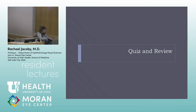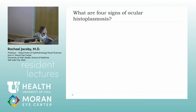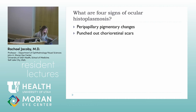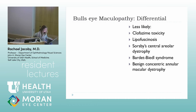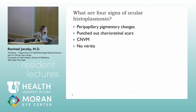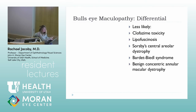Review question: the four signs of ocular histo are punched-out lesions, pigmentary changes, no vitritis, and CNVMs — though not always present. Another question: what is your differential for bullseye maculopathy? The common causes are Stargardt disease, cone-rod dystrophy, hydroxychloroquine toxicity, AMD, chronic CSR, and old chronic macular holes — plus rarer causes that tend to show up on tests.